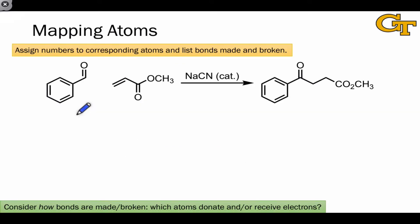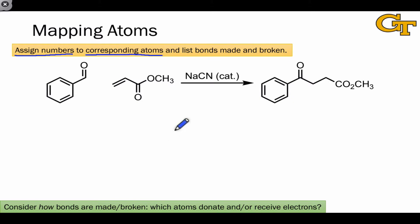The same types of atoms occur over and over again in organic structures — hydrogen, carbon, nitrogen, and oxygen being the four most common. To distinguish between different types of bonds, what we really need to do is map atoms or assign numbers to atoms in the starting materials, and then draw those numbers on the corresponding atoms in the products. This helps us track the atoms visually throughout the reaction.